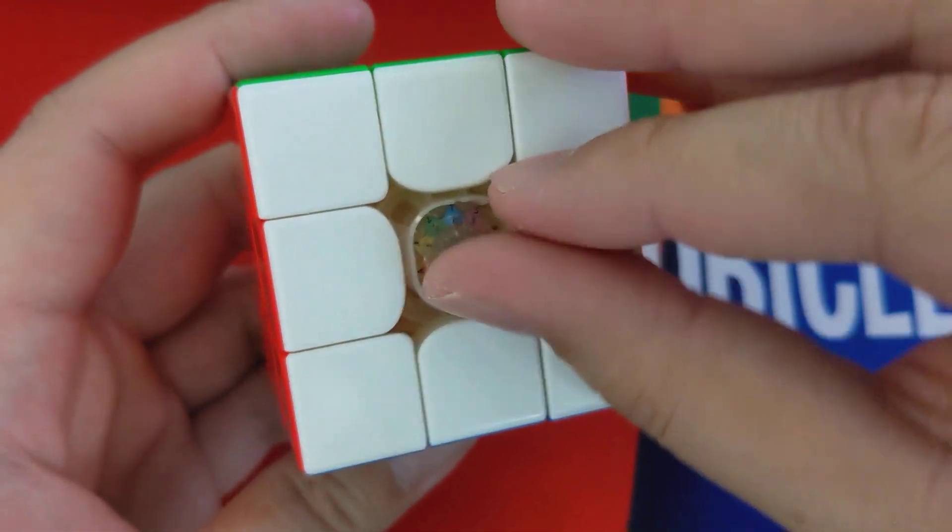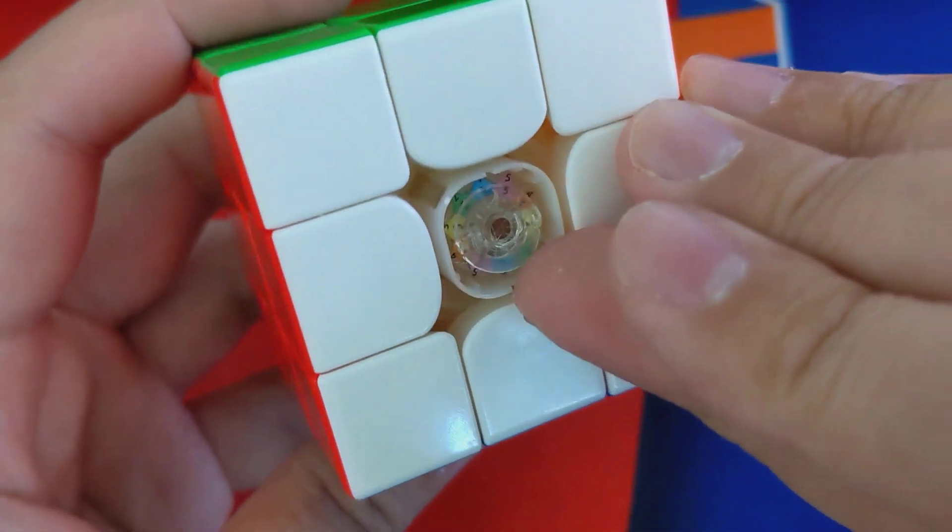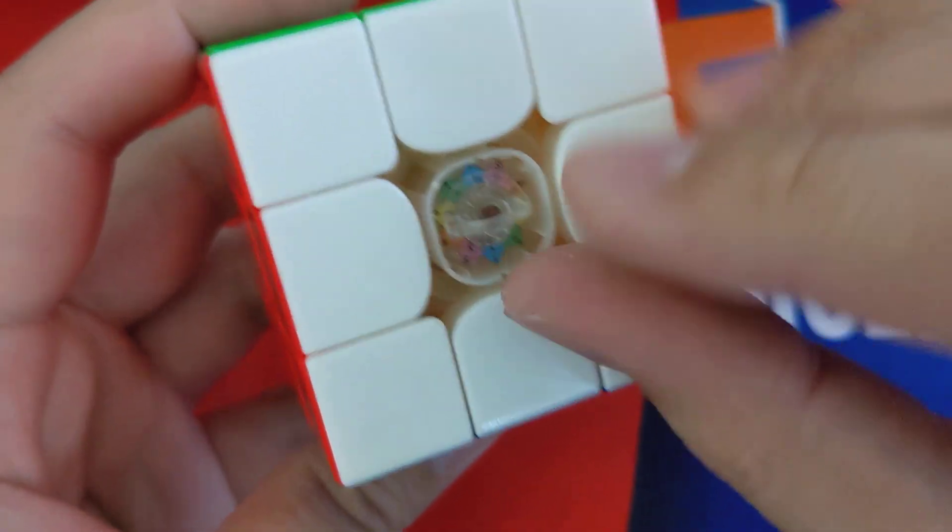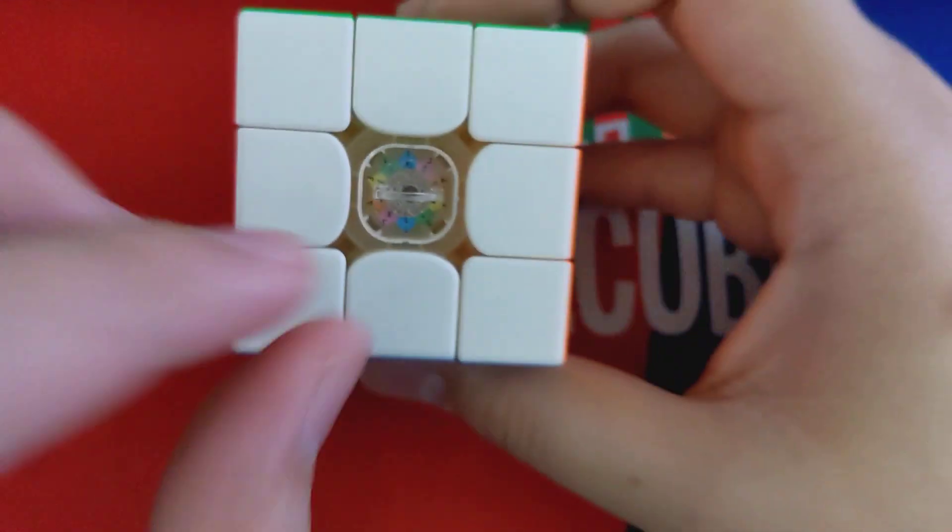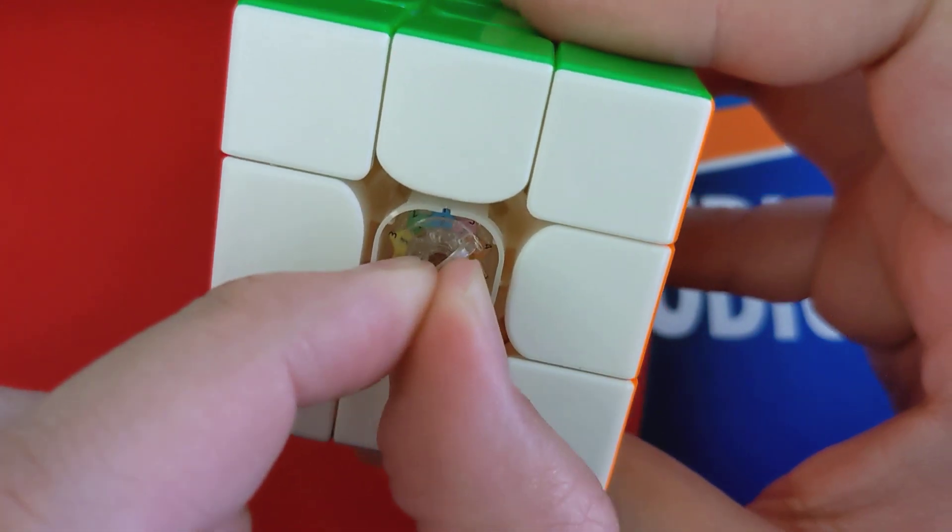So how you would adjust this is you would basically lift this little flap up like that, and turning this counterclockwise will affect the compression.